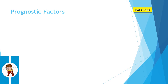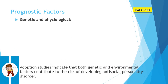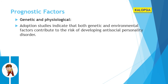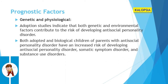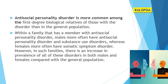Now let's look at the prognostic factors of ASPD. Regarding genetic and physiological factors, adoption studies indicate that both genetic and environmental factors contribute to the risk of developing antisocial personality disorder. Both adopted and biological children of parents with ASPD have an increased risk of developing ASPD, somatic symptom disorder, and substance use disorders. ASPD is more common among first-degree biological relatives of those with the disorder than in the general population.